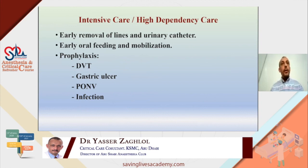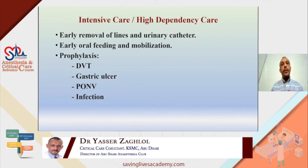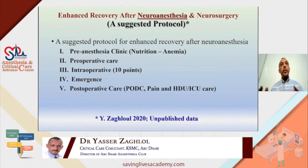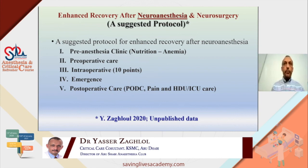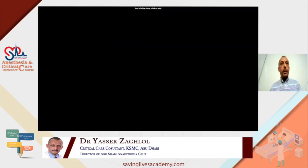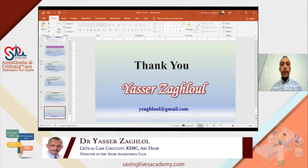The last points are early removal of lines and urinary catheter, early feeding, and early mobilization — the DREAM approach. Prophylaxis for DVT, gastric ulcer, nausea and vomiting, and infection should be given. In summary, I have presented a protocol for supratentorial craniotomy covering these five points, and hopefully you have some benefits from this lecture.